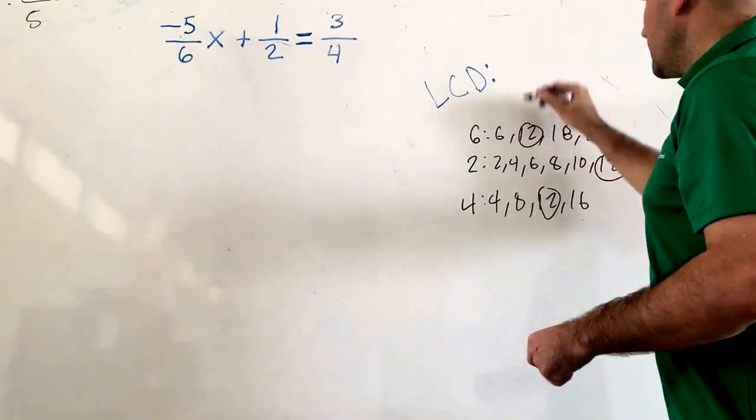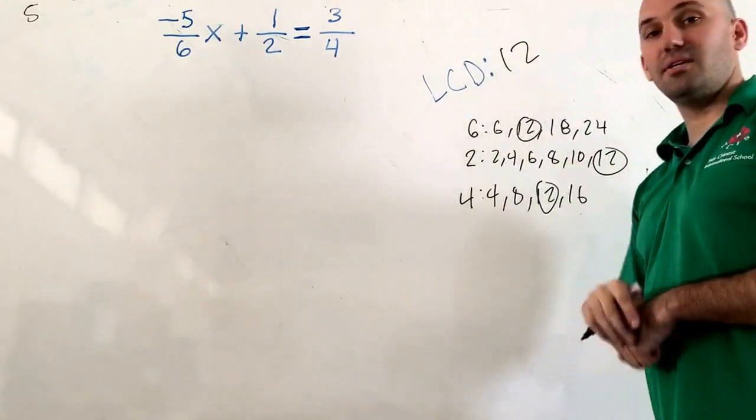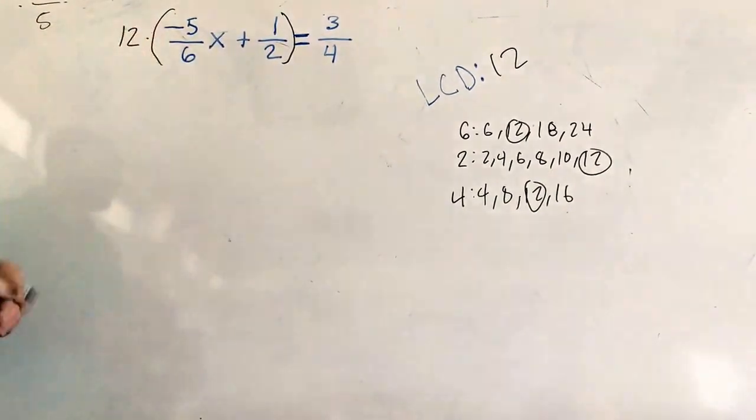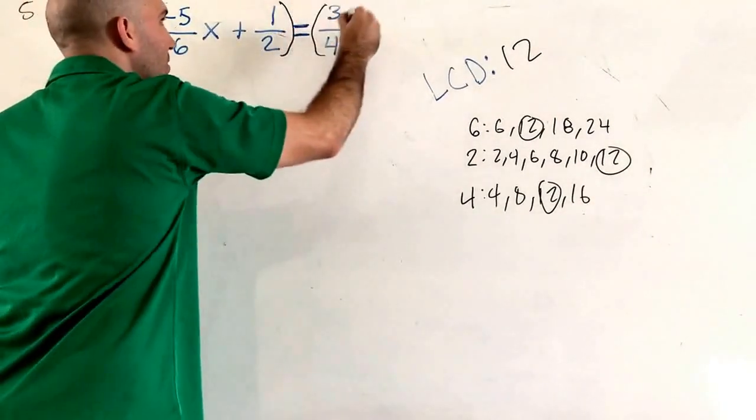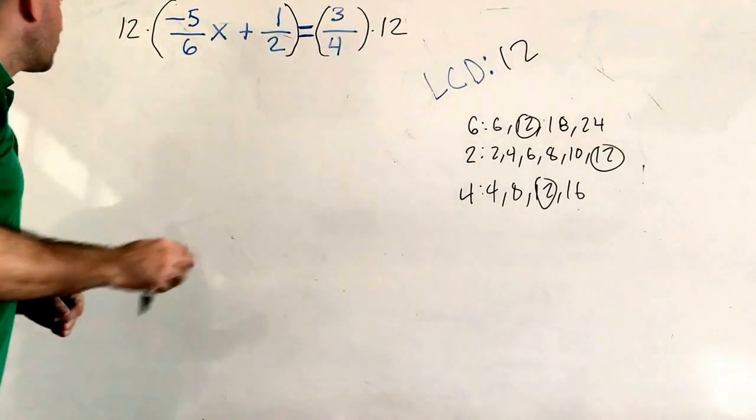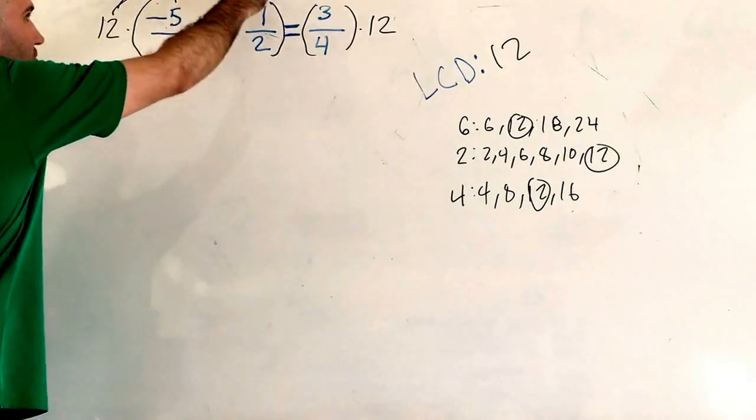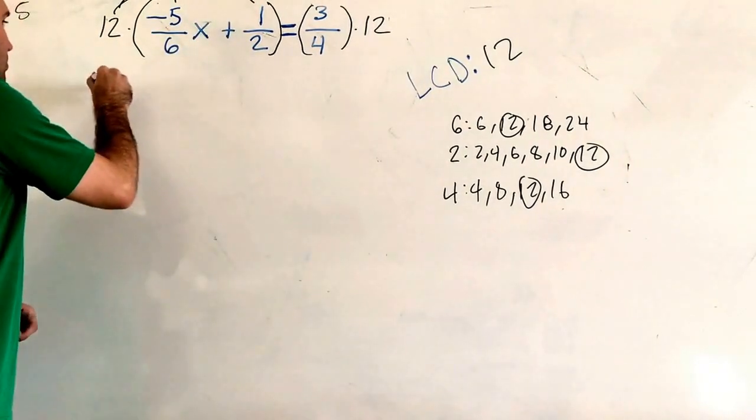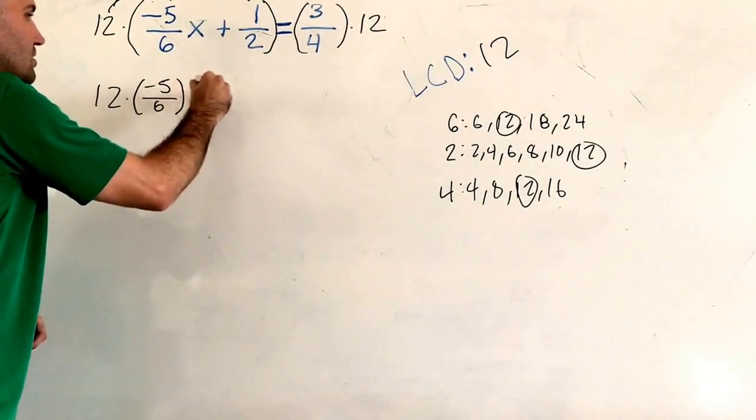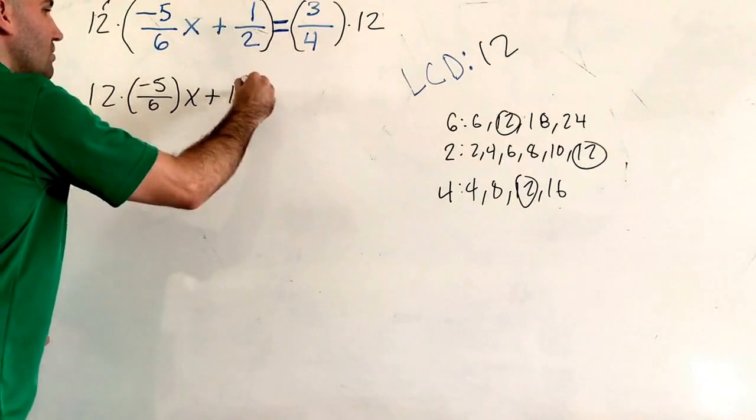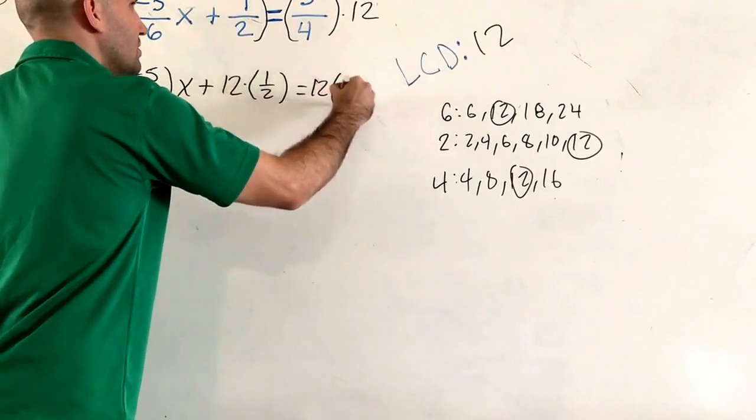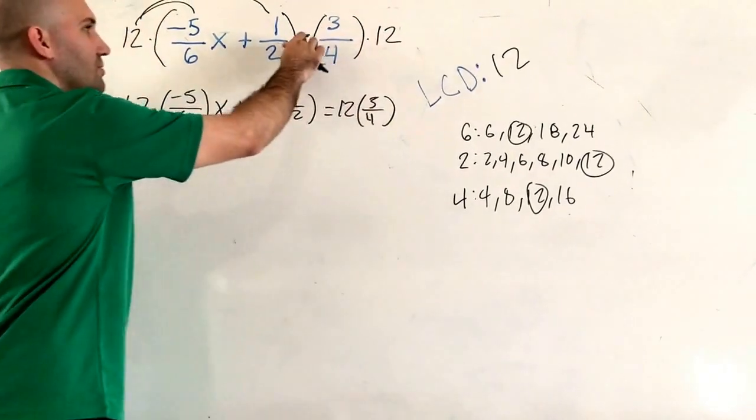I see 12 is going to be my LCD. So what I'm going to do is I'm going to multiply this side by 12, and I'm going to multiply this side by 12. What I do to one side, I do to the other. Now watch how this works. I'm going to do a double rainbow over here. So I'll end up getting 12 times negative 5 over 6x plus 12 times 1 half equals 12 times 3 over 4. I just moved the 12 in the front.